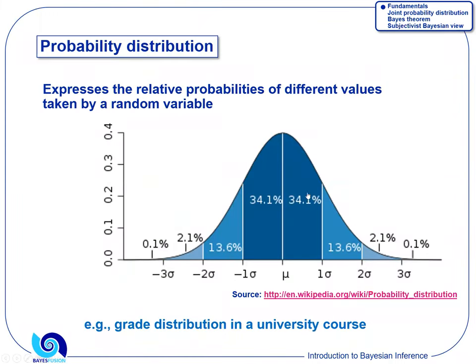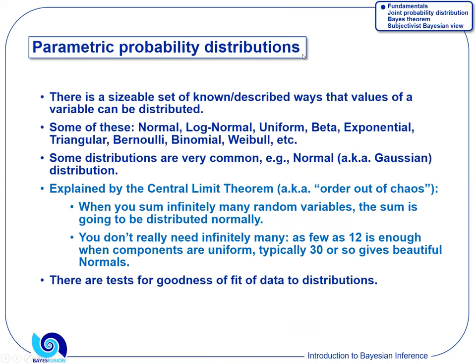A probability distribution tells you how likely different values or states of a variable are. This is a continuous distribution — a normal distribution. Values around the mean are very likely; the further you go from the mean, the less likely. There are many parametric distributions proposed by statisticians. They are convenient because you can express the probabilities over different states of a variable by means of just two or three parameters. Some distributions are based on physical properties of the world.